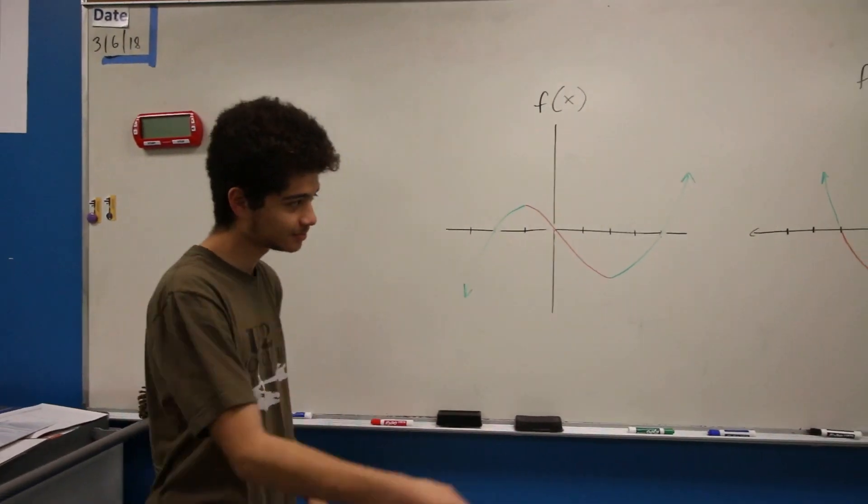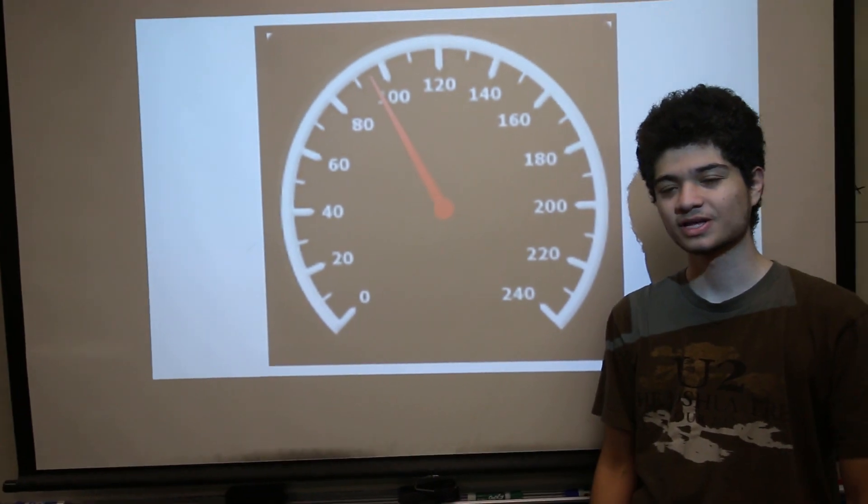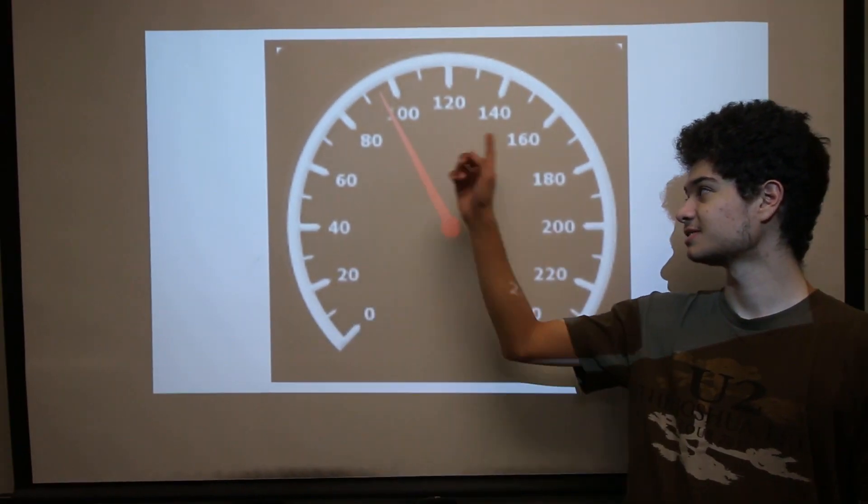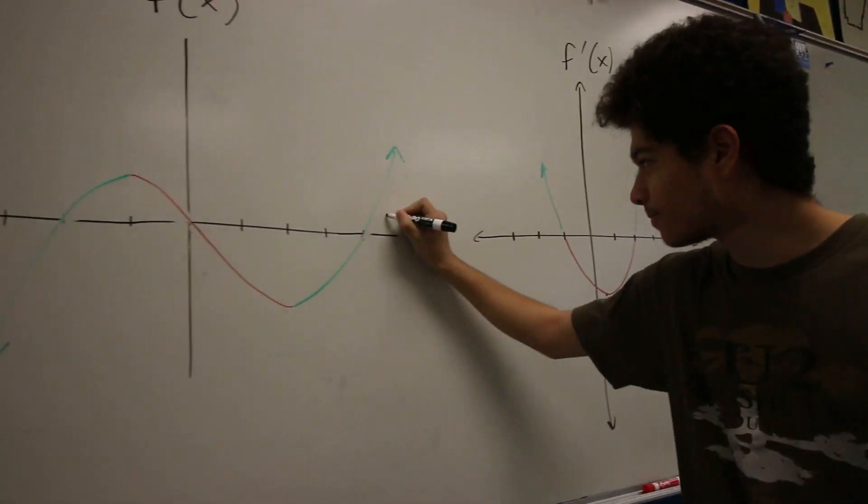F isn't the best place to find the slope, so f prime is where I go. The y value of the derivative tells you if the position's moving fast or slow. When f prime is over the x-axis the position's increasing, decreasing when it's below.